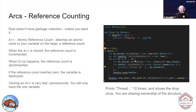Make a bunch of threads. I'm cloning the ARC over and over into each of the threads and printing them out. So it prints out thread 0 to 10, and then shows the drop exactly once. So what magic is going on here?